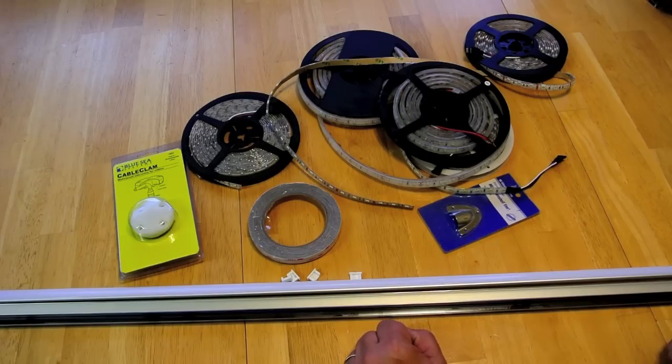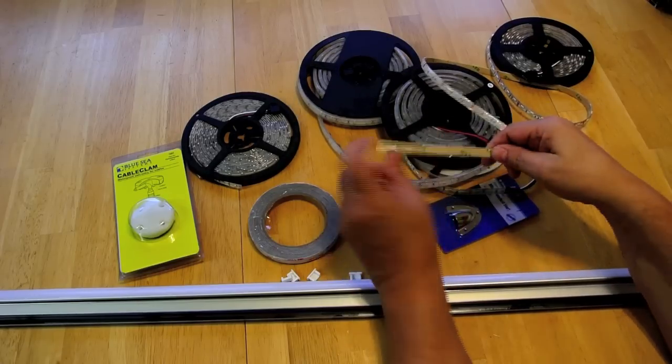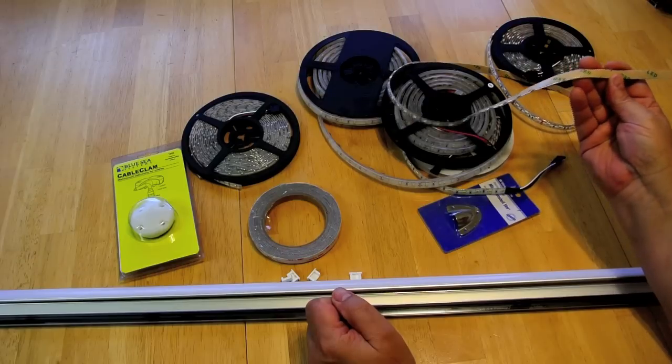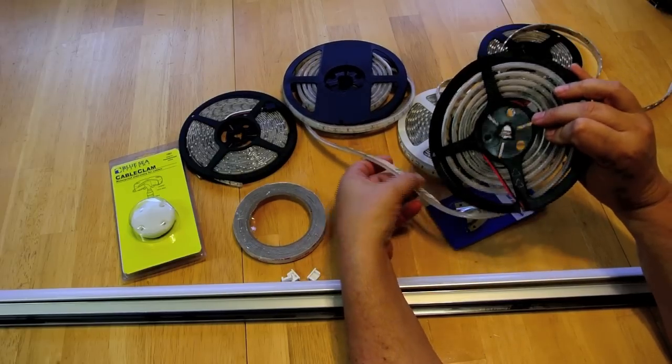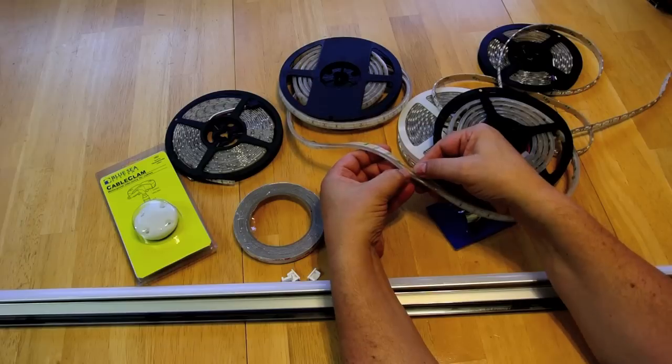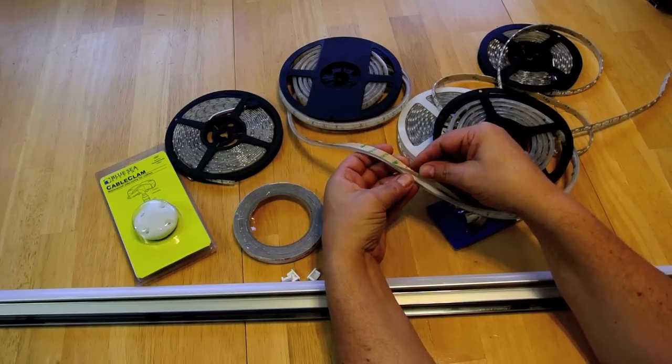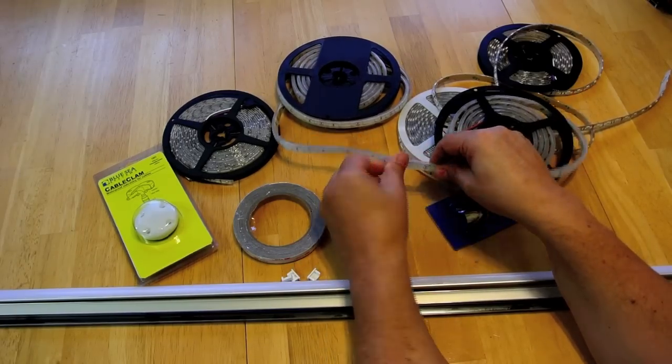Now most of these LED strip lights, if not all of them, do come with an adhesive backing. And you can see that here. The problem is this backing may or may not be sufficient. Now this one, for example, the adhesive backing, the cover is starting to separate, which means just sitting around, this is going to get dirt in it and it's just not going to seal very well.